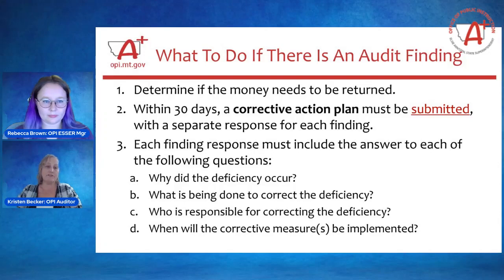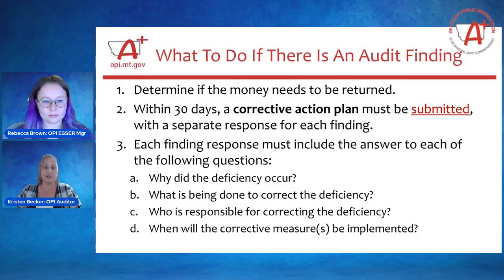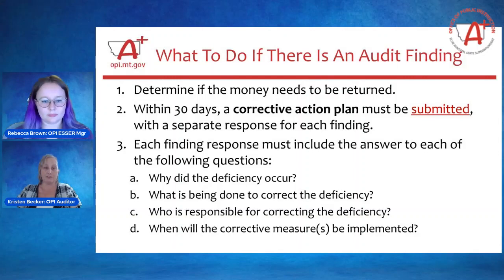What to do if there's an audit finding? Once you've determined whether the funds will need to be repaid or not, you will need to create a corrective action plan. This plan must be submitted within 30 days of your audit and must consist of a response to each of the following questions for each finding: Why did the deficiency occur? What's being done to correct the deficiency? Who's responsible for correcting the deficiency? And when will the corrective measures be implemented? We work closely in conjunction with local government services, a branch of the Department of Administration. These corrective action plans should be submitted to them through that audit submission portal, and we appreciate an email to OPI as well so we can grab it from that portal for our records.